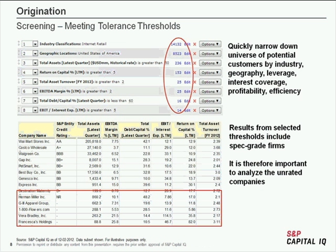Thank you, Kevin. I'm going to focus on the screening process during origination. As Kevin mentioned, what's key is efficiency and speed, but we also want to incorporate credit metrics during that process. I draw the analogy of a car and the brakes — brakes actually let someone drive fast, because imagine how fast you'd drive a car without brakes. So how do we incorporate credit metrics in the origination process?